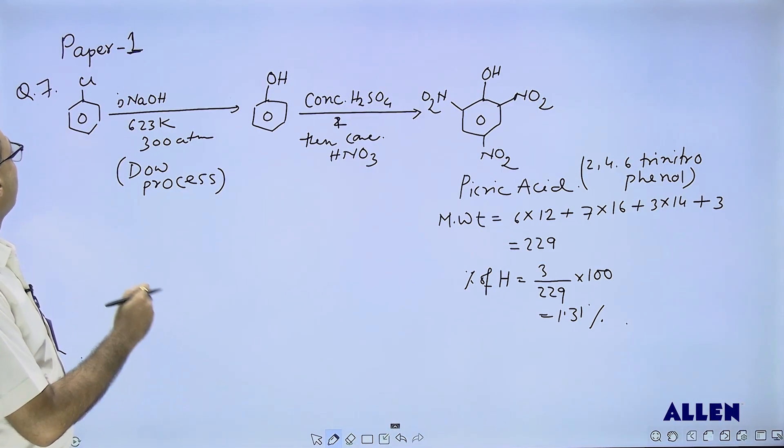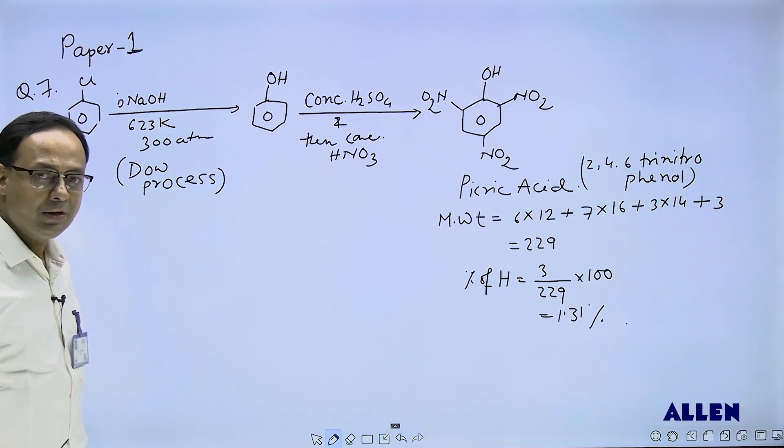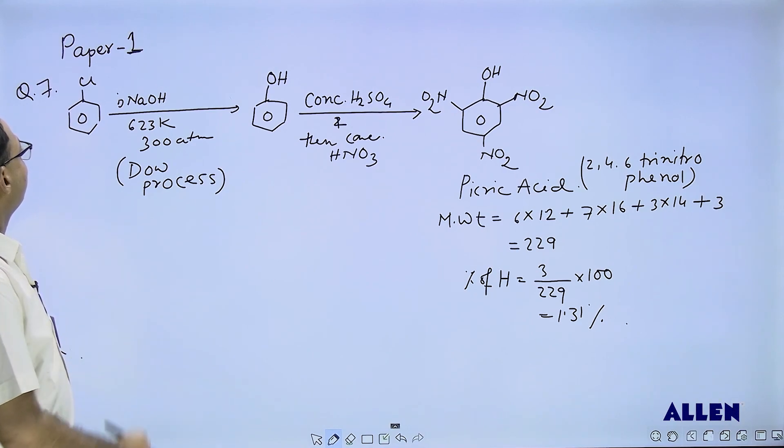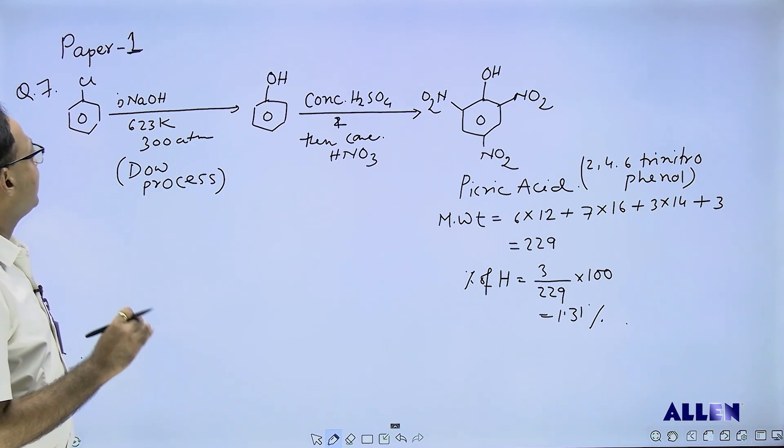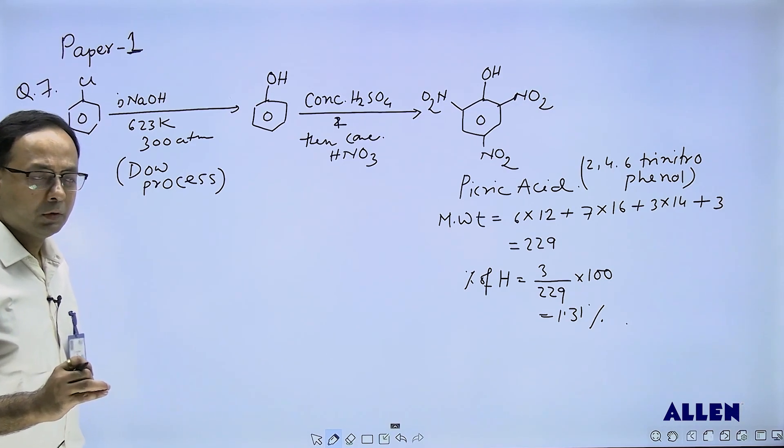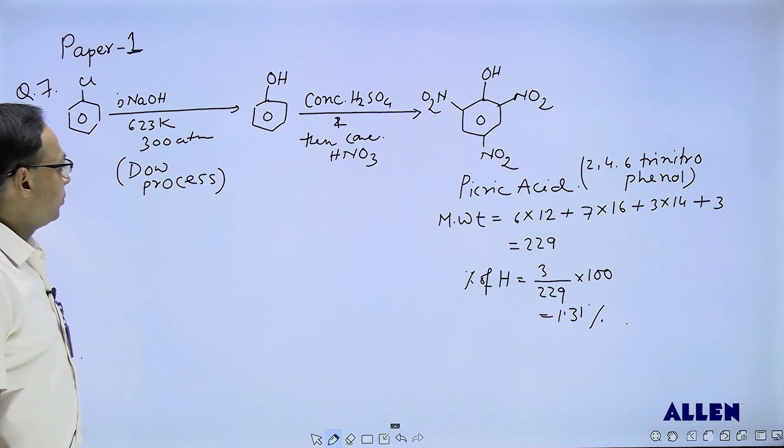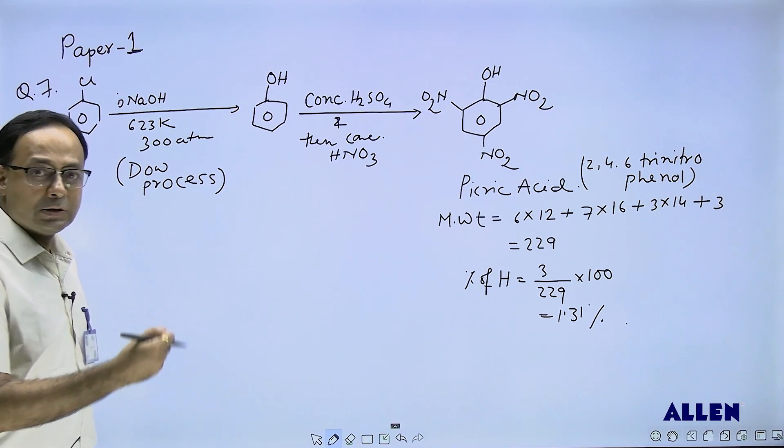Paper one, question number seven. This question is based on aromatic chemistry. Chlorobenzene reacts with NaOH at high pressure and high temperature. The product is phenol, which is called the Dow process. Then phenol is treated with concentrated H2SO4 and then concentrated HNO3.